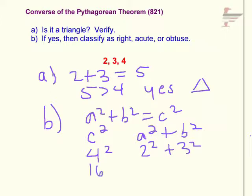So we compare 16, the longest side squared, to 4 plus 9, which is 13. 16 is greater than 4 plus 9. So we have an obtuse triangle.